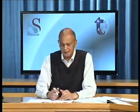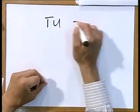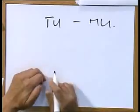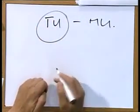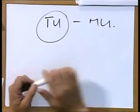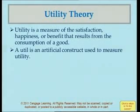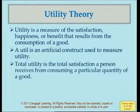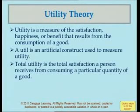Now, two important concepts are very important here: the concepts of total utility and the concept of marginal utility. So firstly, let's look at total utility. What is total utility (T-U)? Total utility is the total satisfaction a person receives from consuming a particular quantity of a good.